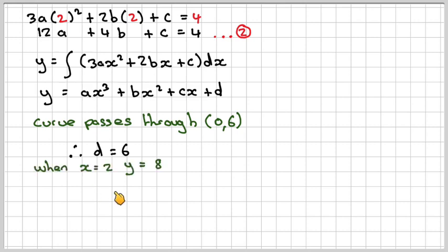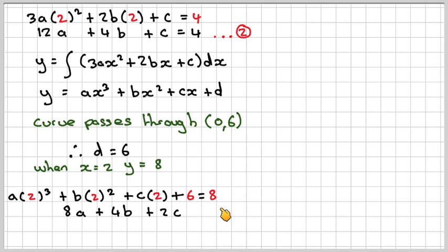When x equals 2, y equals 8, so we substitute that in. We get a times 2³ plus b times 2² plus c times 2 plus 6 equals 8. 2³ is 8, giving 8a, 2² is 4, giving 4b, plus 2c. Taking 8 to the other side gives 2.